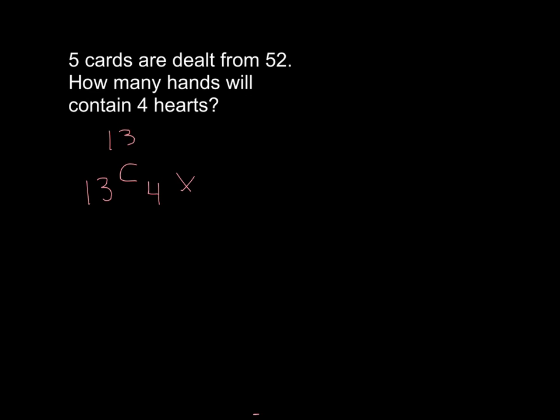And then for the fifth card, we have to choose from the remaining 39 cards, the ones that aren't hearts, and we only have to choose one of those because the four plus the one will make the total of the five cards in the hand.